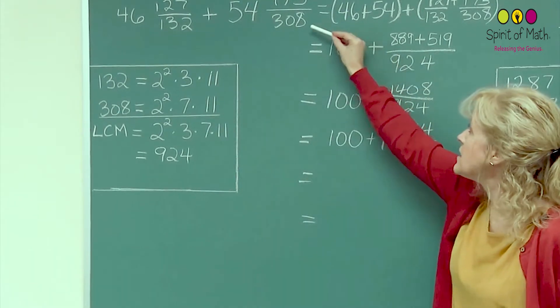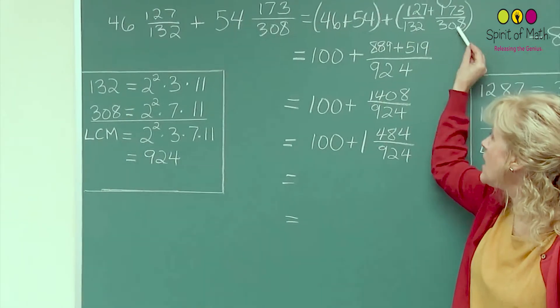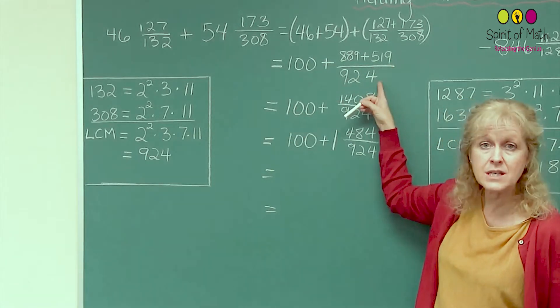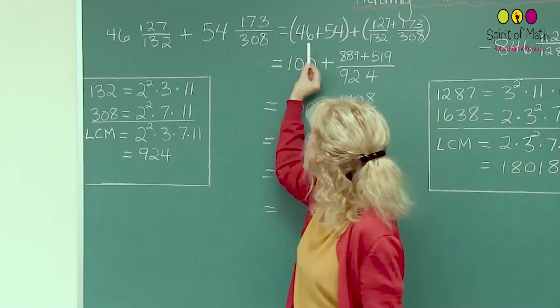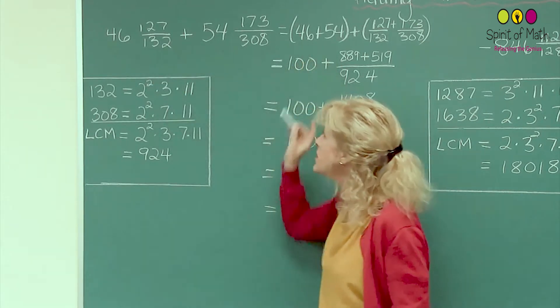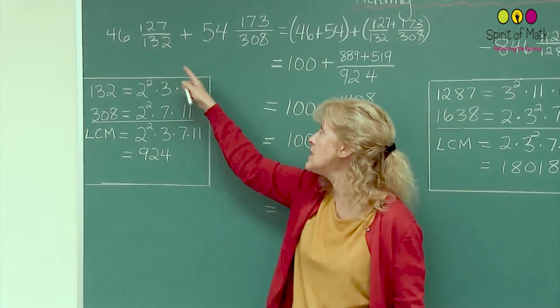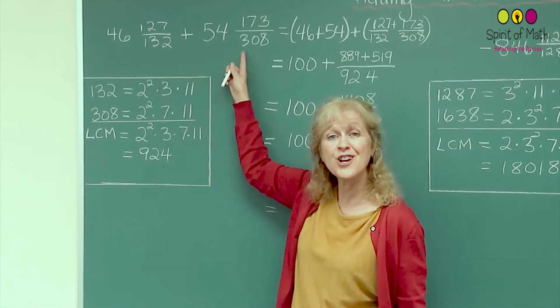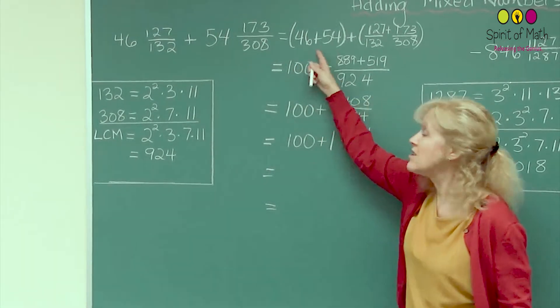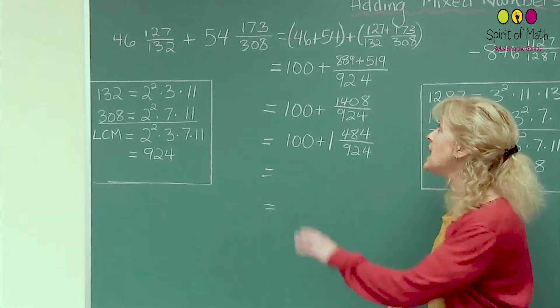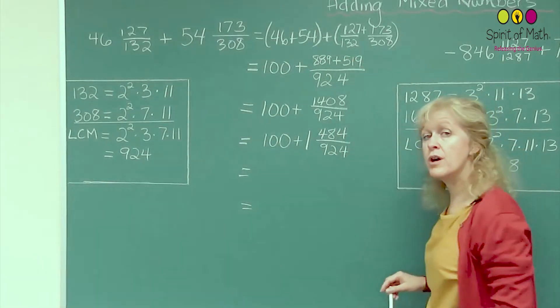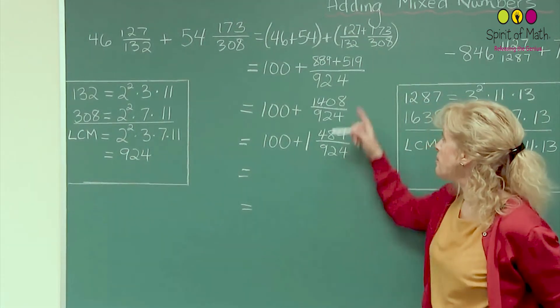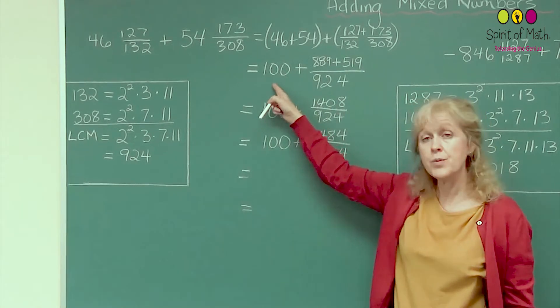So if you notice here the first step that happens here is not even including that 924 yet. That's the second step. So let's look at first of all here what happened was that you just add the integer parts because you know that you're going to have 46 plus 54 and a couple of extras, whatever that extra is with the fractions. So why not just add those two integer parts together. Leave that separate from the fraction part.